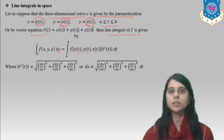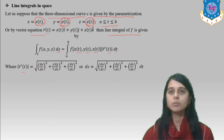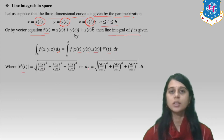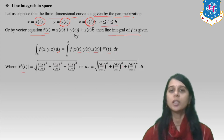The modulus |R-bar prime(t)| equals the square root of (dx/dt)² plus (dy/dt)² plus (dz/dt)². And ds equals the square root of (dx/dt)² plus (dy/dt)² plus (dz/dt)², all times dt.